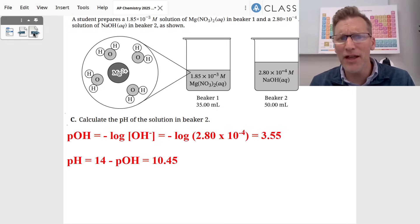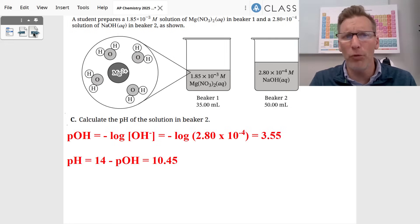Part C is asking us to find the pH of the solution in beaker two. Beaker two is 2.8 times 10 to negative four molar of sodium hydroxide. Sodium hydroxide is a strong base, which means we need to find the pOH first by negative logging the OH minus. That gives us 3.55. We subtract that from 14 to find the pH of this strong base of 10.45.